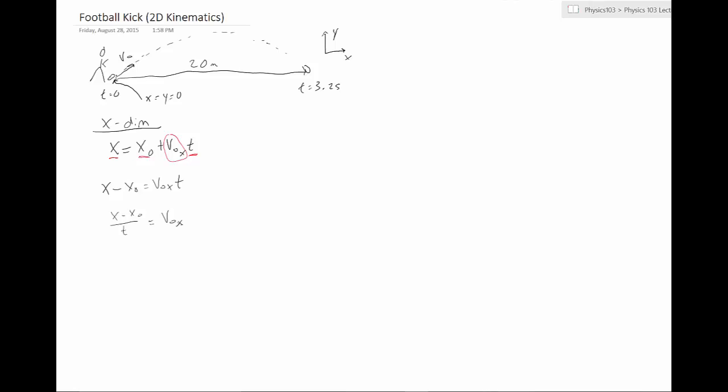So let's go ahead and solve for that. We've got that the distance that it traveled was 20 meters. Again, it started at zero meters. And we're dividing by the total time, which is 3.2 seconds. All right. And that just gives us, divide by 3.2, it gives us a 6.25 meters per second.